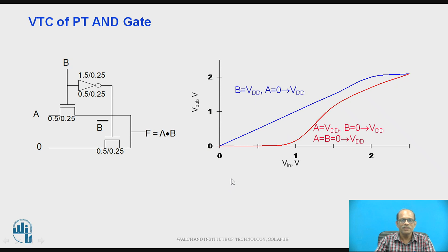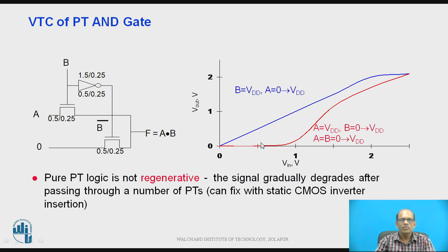So for this VTC you can observe that if B is equal to 1, this NMOS is conducting and therefore the output F is equal to A and when A changes from 0 to VDD, the output follows the input. So gain is 1 because this MOSFET NMOS is conducting and in this second curve, let us take the another condition.